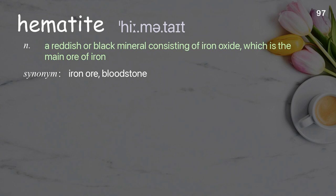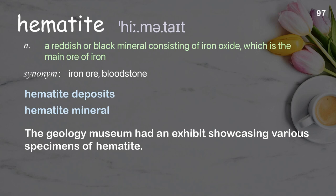Hematite: a reddish or black mineral, consisting of iron oxide, which is the main ore of iron. Examples: hematite deposits, hematite mineral. The geology museum had an exhibit showcasing various specimens of hematite.